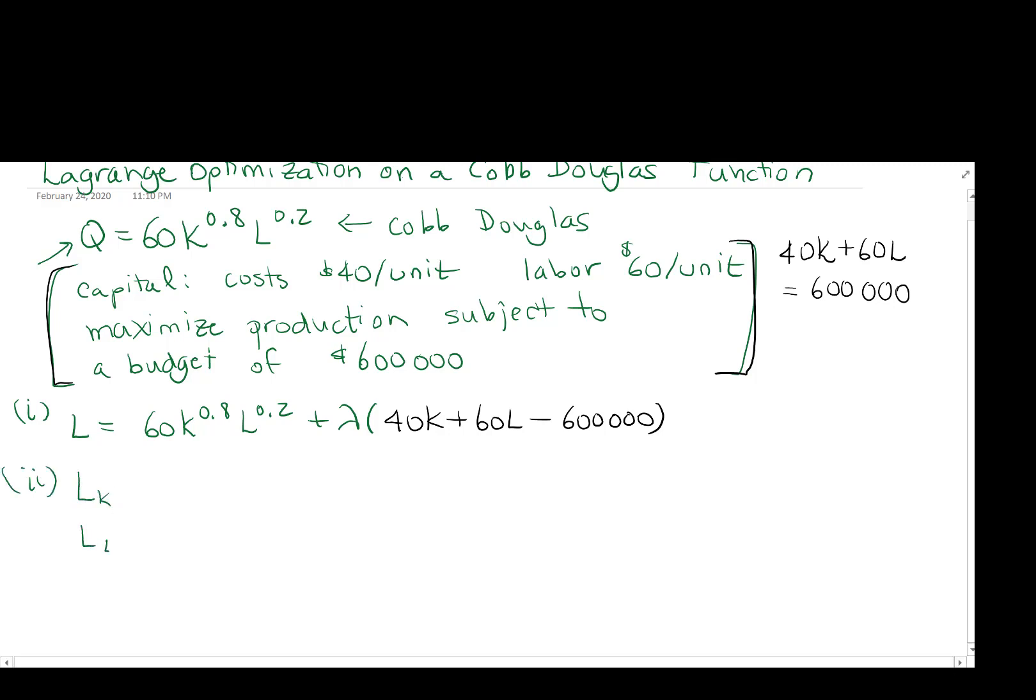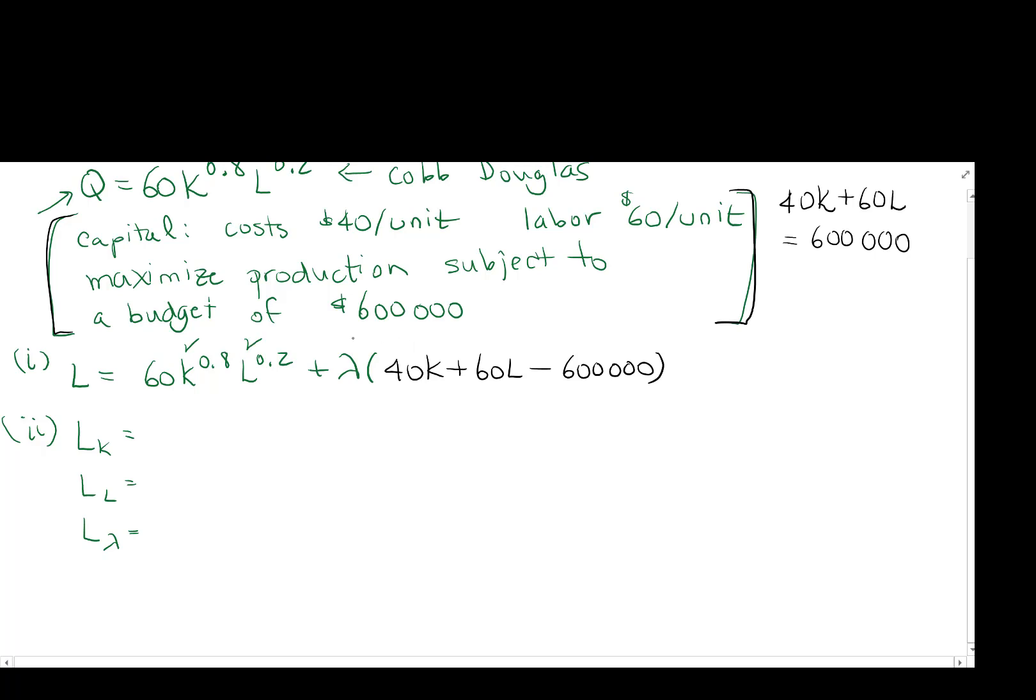Step two, we're going to go and take our derivatives with respect to K, L, and lambda. Those are our three variables. So we get 60 times 0.8K to the 0.8 minus 1 gives negative 0.2 times L to the 0.2, plus lambda times the derivative of 40K with respect to K is 40. Derivative of 60L is nothing. Derivative of 600,000 is nothing with respect to K. So we end up with 60 times 0.8 here, which gives us 48K to the negative 0.2L to the 0.2 plus 40 lambda.